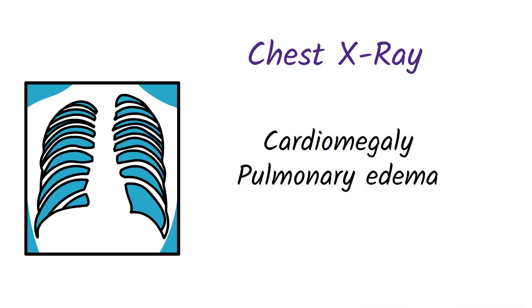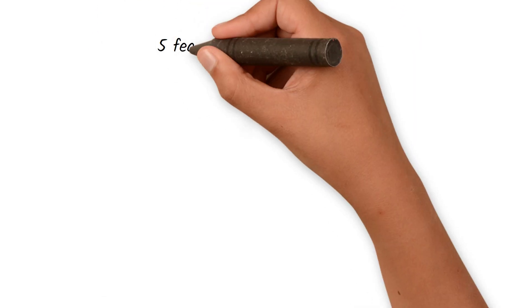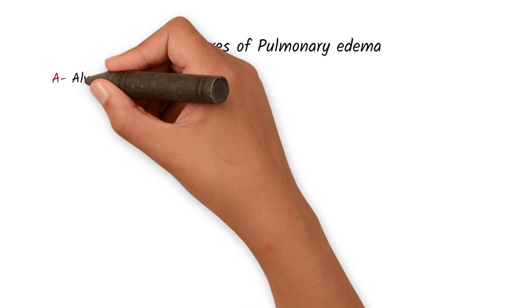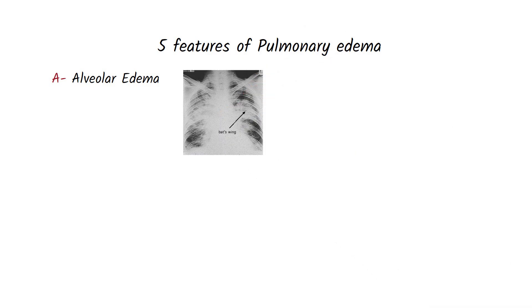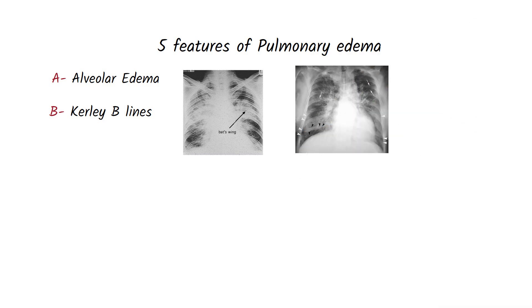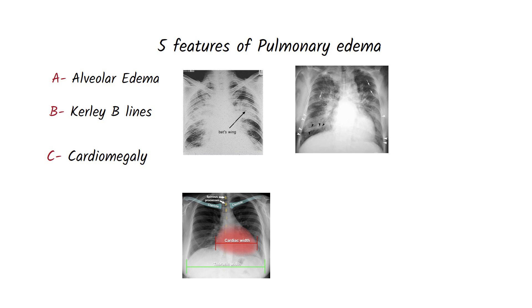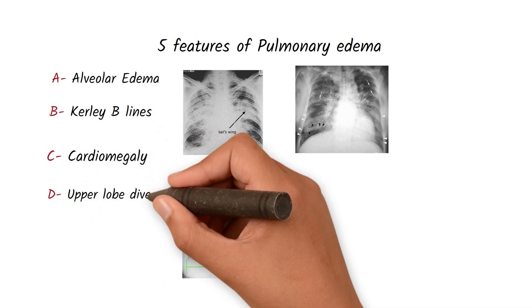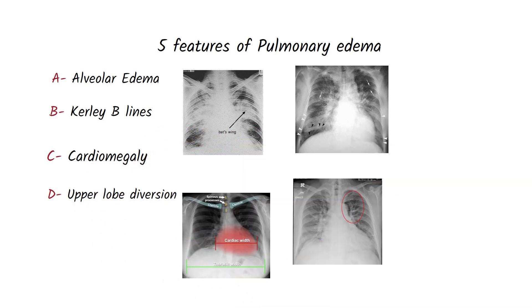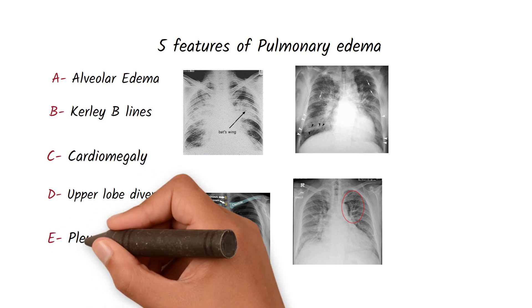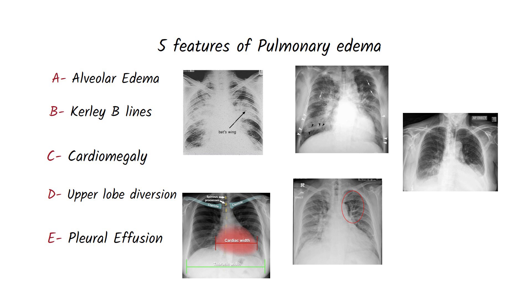The features of pulmonary edema on chest X-ray can be remembered with the mnemonic ABCDE. A is for alveolar edema, seen as a bat-wing sign. B is for curly B-lines due to fluid in the fissures. C is for cardiomegaly, where the width of the heart is more than 50% of the thoracic width. D is for upper lobe diversion due to pulmonary vein engorgement. E is for pleural effusion, so the costophrenic angle will be blunted.